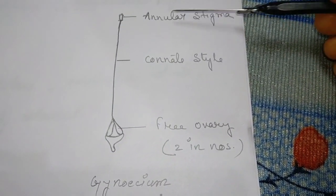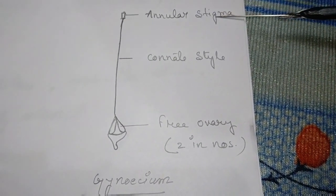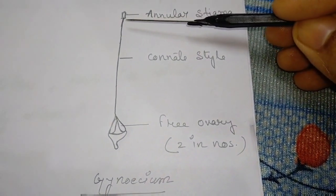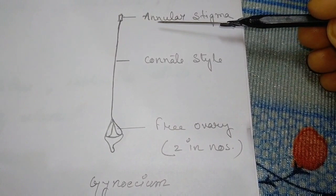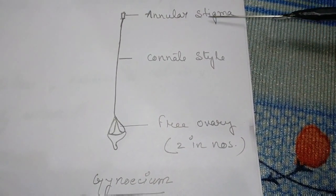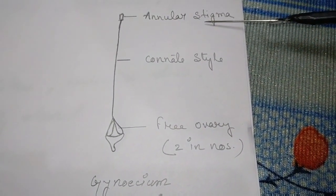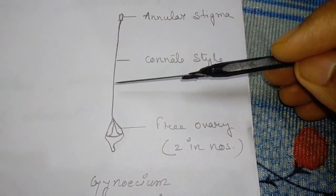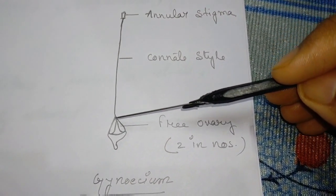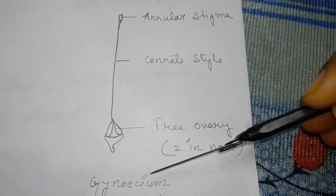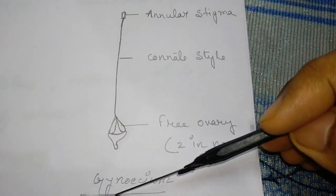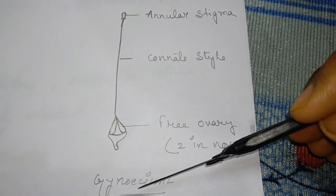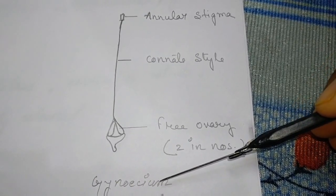The shape of the stigma is drum-shaped, or you can say annular-shaped stigma. The style is a cornet style. This is the gynoecium of the periwinkle flower.